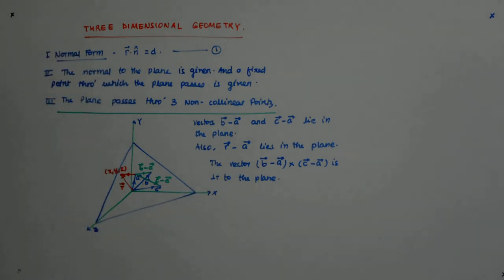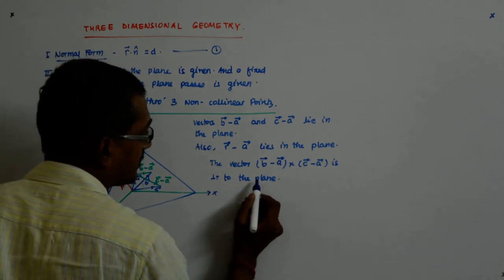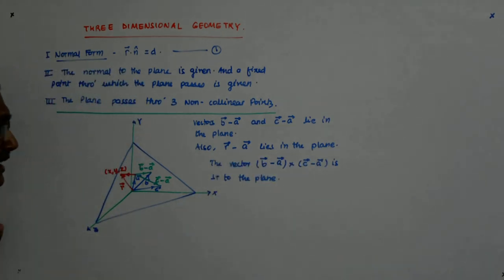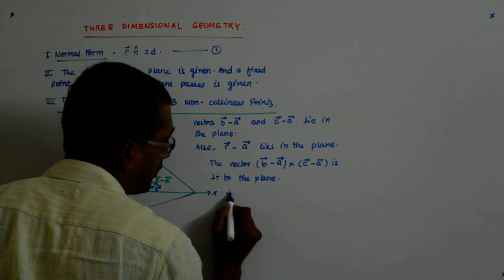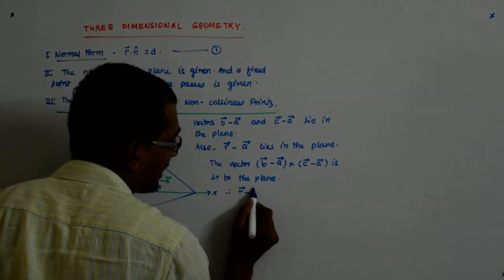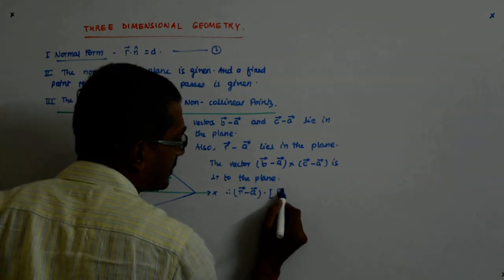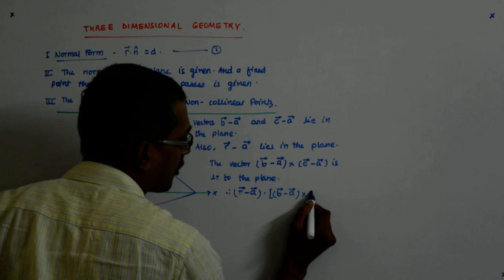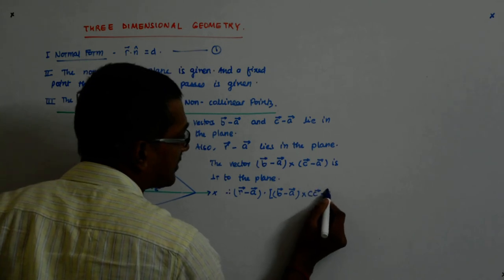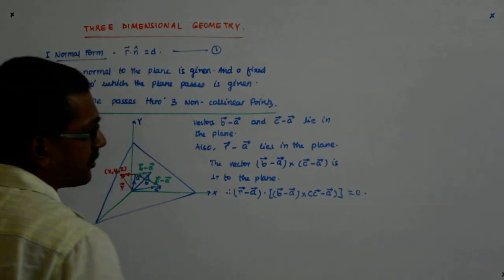The vector b minus a cross c minus a is perpendicular to the plane, and r minus a lies in the plane. Therefore, r minus a dotted with b minus a cross c minus a is equal to 0.